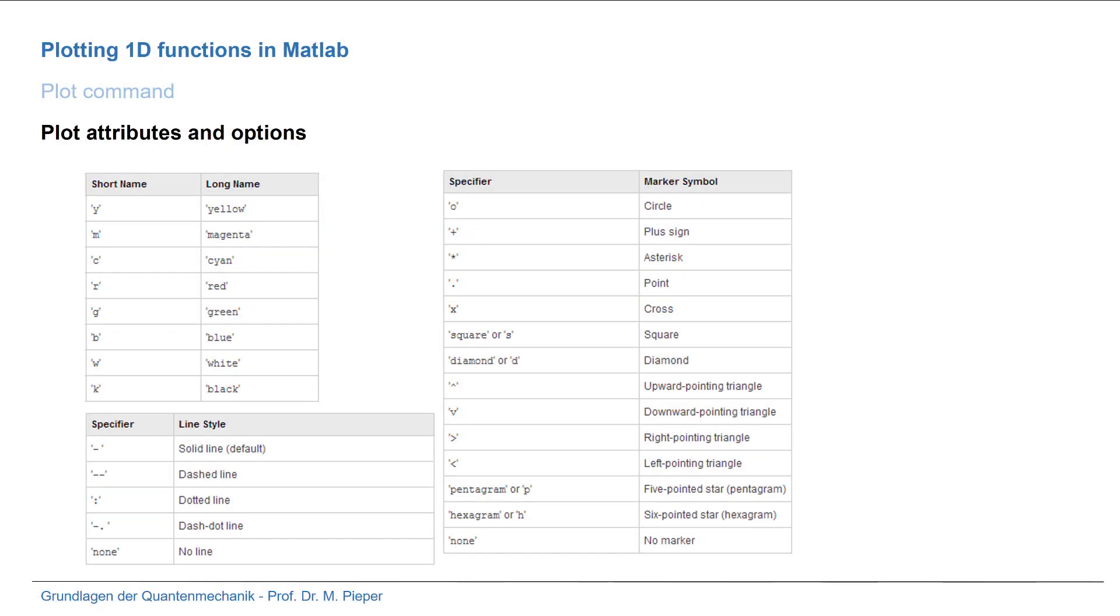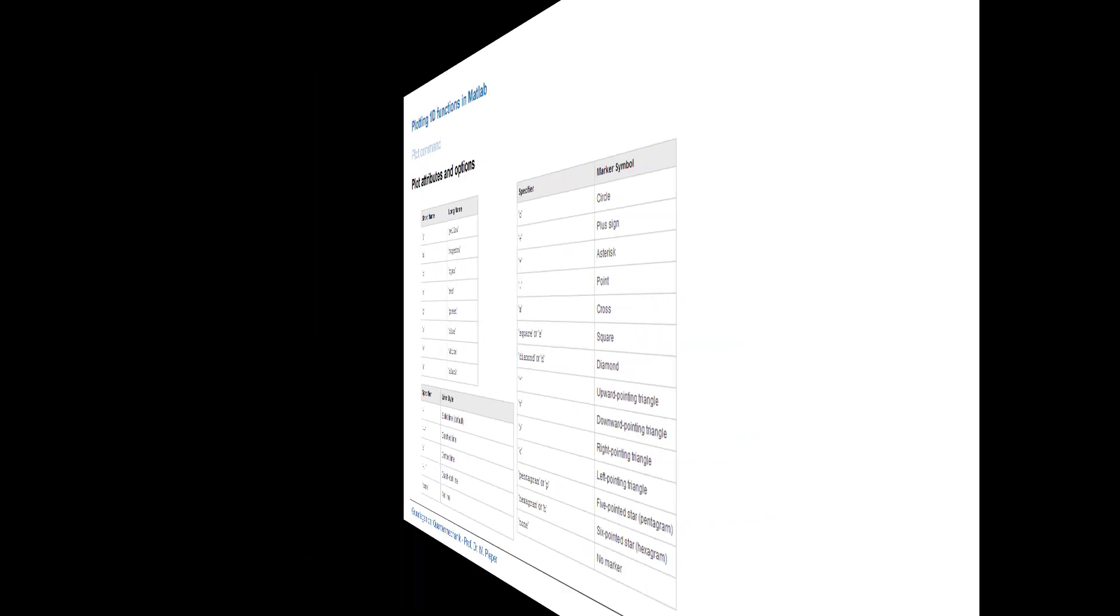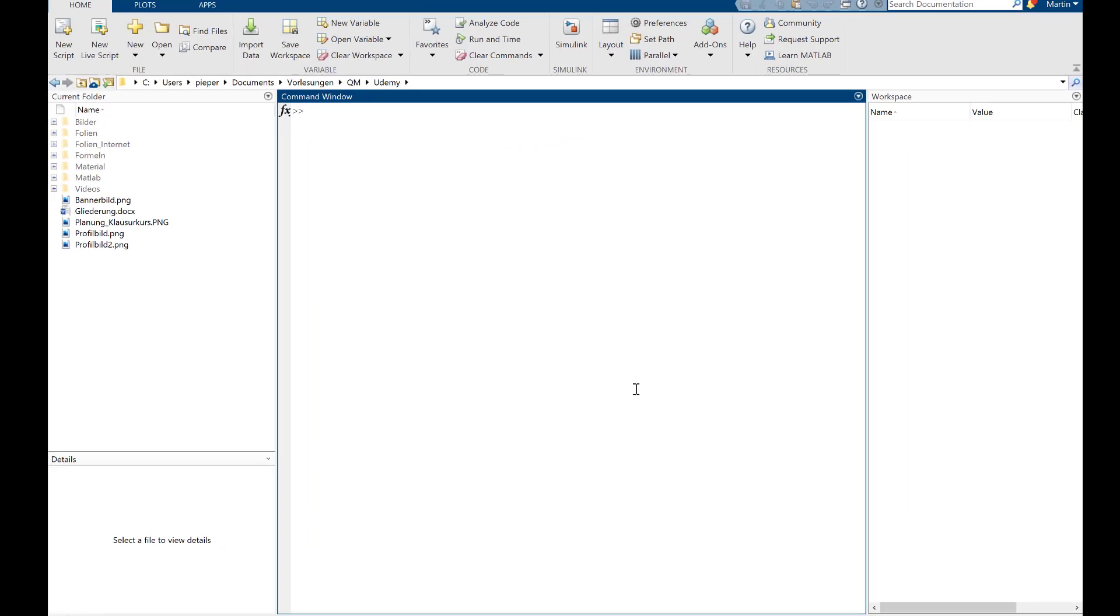Here are plot attributes and options you can add at the end of the plot command, separated by a comma. For example, the color code, the line specifier (dashed line, solid line which is default), or a marker specifier for the points you plot. Let's switch to MATLAB.